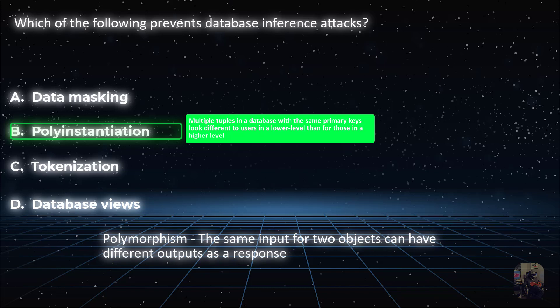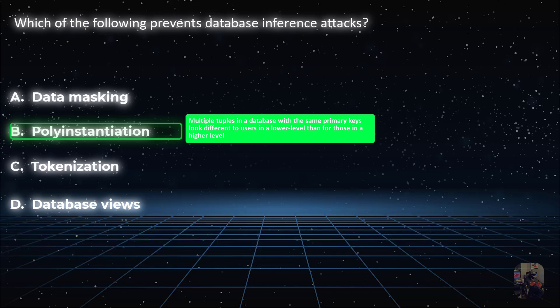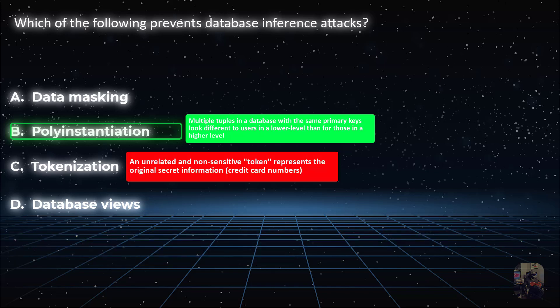The correct answer is B. Which of the following prevents database inference attacks? Choice B: poly instantiation.